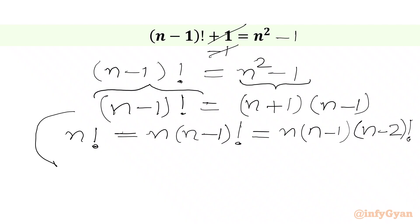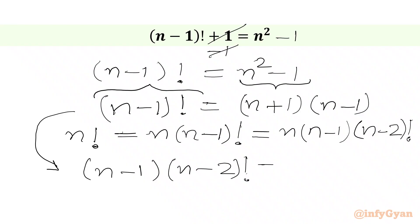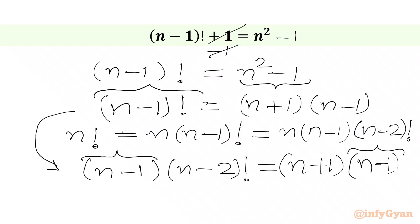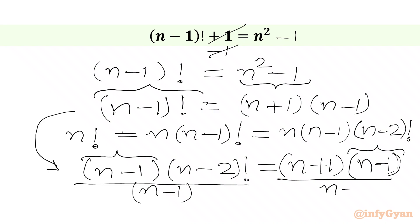I can write our equation as (n minus 1) times (n minus 2) factorial on the left hand side. Now in the LHS we have (n minus 1), and in the RHS we also have (n minus 1). So we can cancel — or divide both sides by (n minus 1). But we have to make sure that (n minus 1) should not be zero.